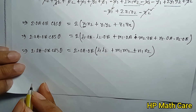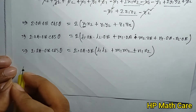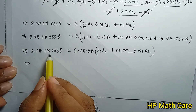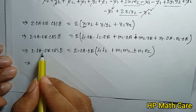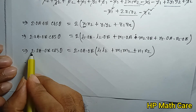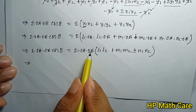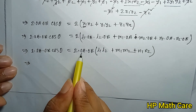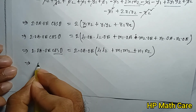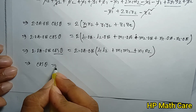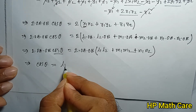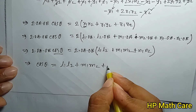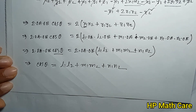Okay, now you will see the next step. So: 2·OA·OB·cos theta equals 2·OA·OB into l1·l2 plus m1·m2 plus n1·n2. Therefore cos theta equals l1·l2 plus m1·m2 plus n1·n2. This is the result — the angle theta between two lines with direction cosines l1, m1, n1 and l2, m2, n2.